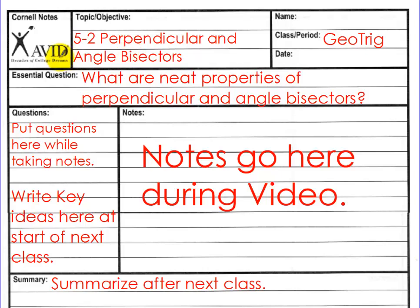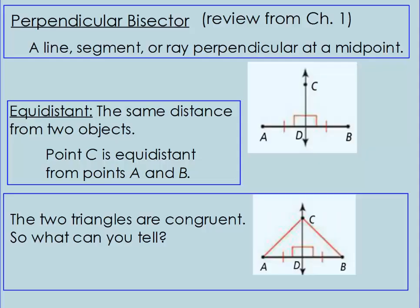Alright, welcome GeoTrig. This is section 5-2, Perpendicular and Angle Bisectors. The essential question is: what are neat properties of perpendicular and angle bisectors? Let's begin.